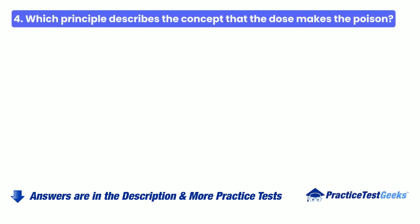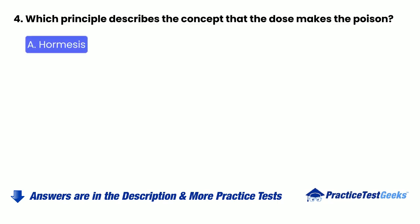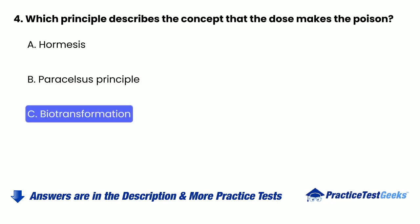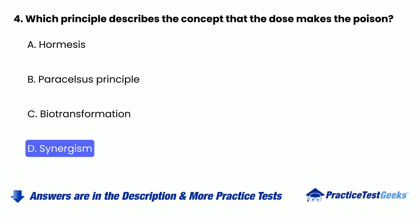Question 4: Which principle describes the concept that the dose makes the poison? A. Hormesis. B. Paracelsus principle. C. Biotransformation. D. Synergism.